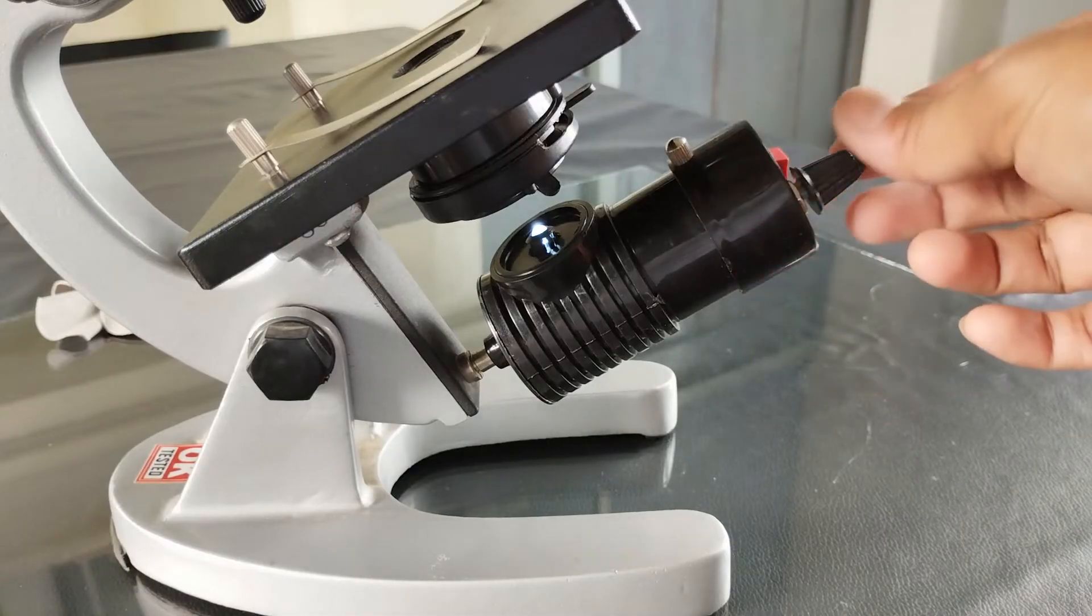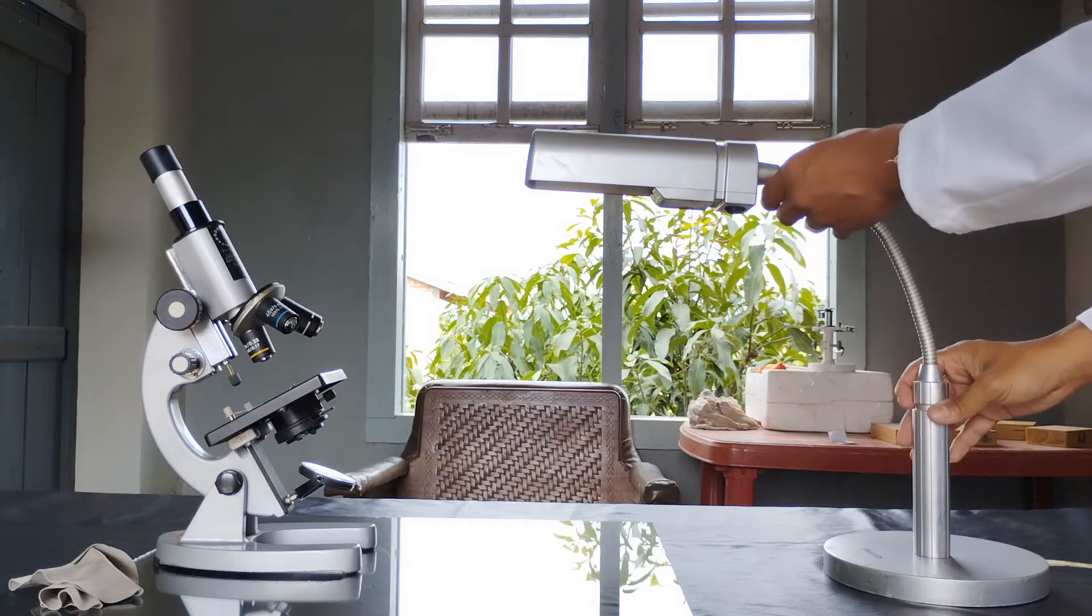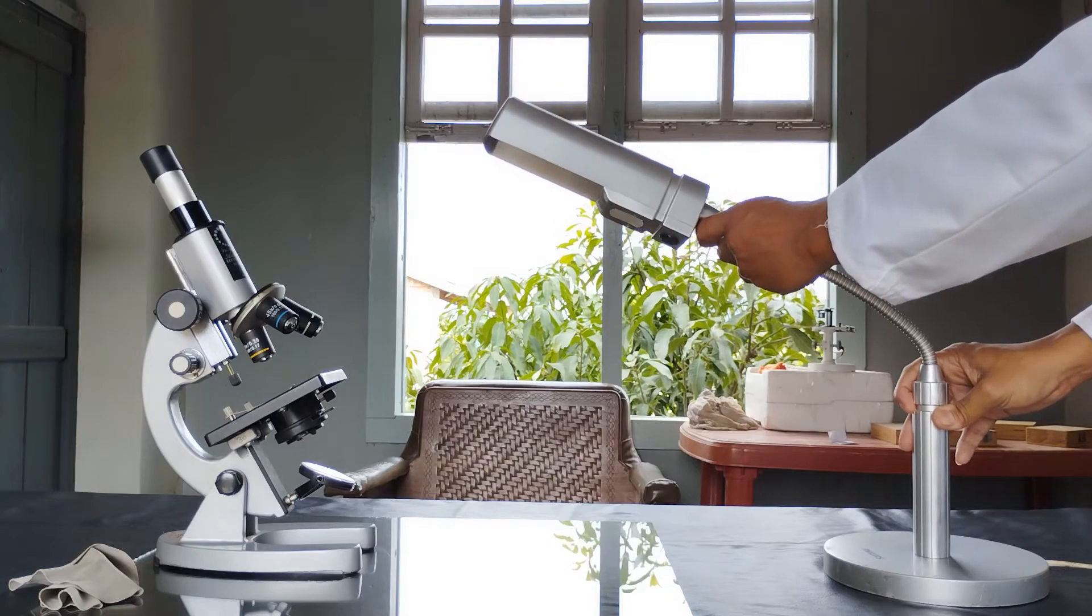If artificial light source is used, adjust the intensity of the lamp or position the external lamp such that the circular field of view is uniformly illuminated, but not uncomfortably bright.